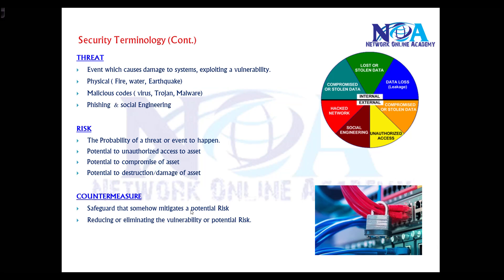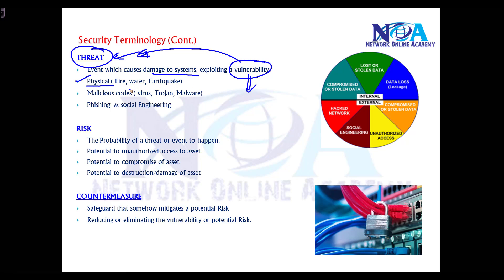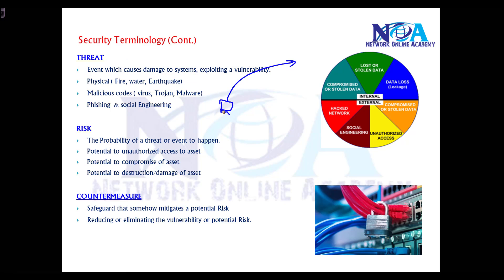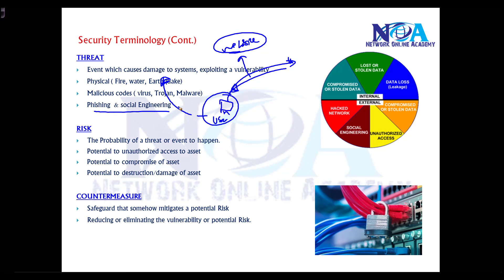Threat is an event which can cause damage to your systems, or where an attacker uses existing vulnerabilities in your network to introduce an attack. Threats can be physical, like fire, flooding, or an earthquake, or they can involve malicious code — for example, a user accesses a website and downloads malicious content that spreads across the network. Other threats include phishing and social engineering attacks.